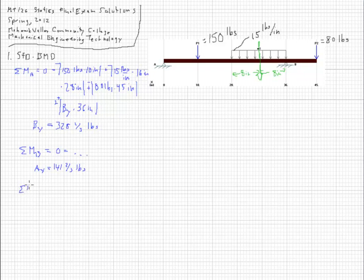And to check we take the forces in the Y direction. We add them up. And we've got 150 down. This ends up actually being 15 times 16 is 240 pounds total load there. And then 80 pounds. So, that's 390, 470. And then we add up these two that are positive. 141 plus 328 is 469. Then the two-thirds and the one-third add up to one. So, that's 470 pounds. So, all of that checks. Which is great.